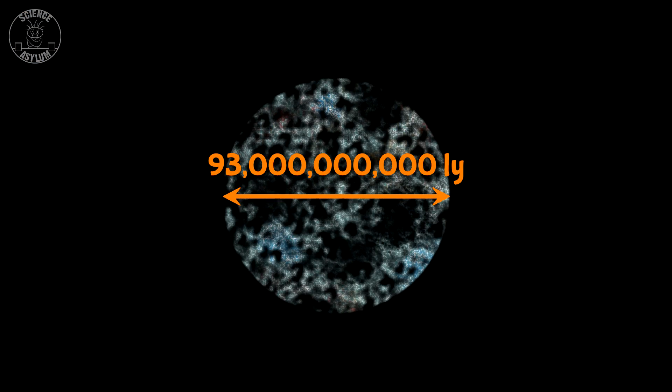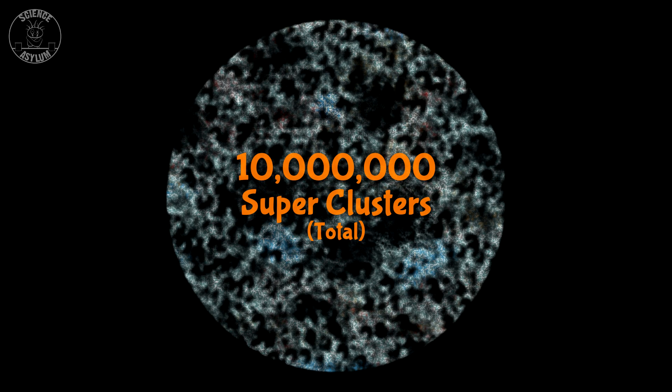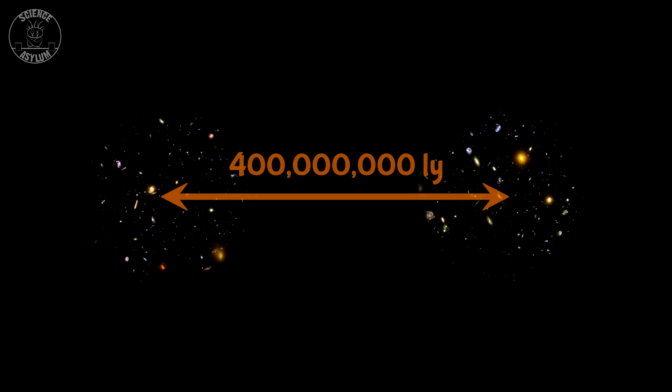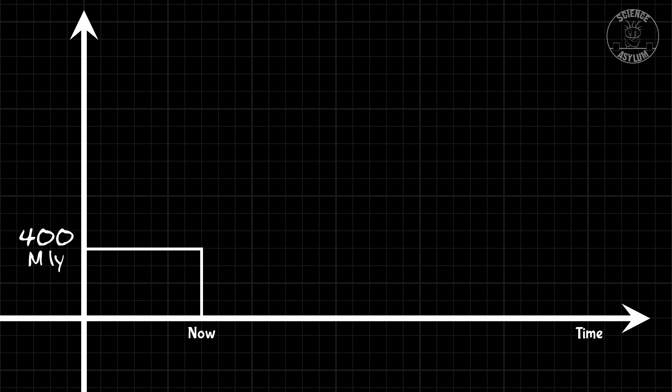That death will happen in the very distant future, but how that will go down depends heavily on the past and the present. Let's start with the present. We need a number that can tell us how big the universe has grown, and that can be tricky if the universe is infinite. We know the observable universe is 93 billion light-years across, but since the cosmic horizon can grow at a different rate than the universe expands, that bubble doesn't always contain the same amount of stuff. We need something a little more useful. The observable universe contains about 10 million superclusters, meaning the average distance between superclusters is currently about 400 million light-years.